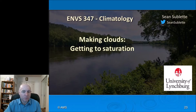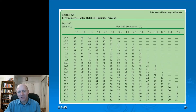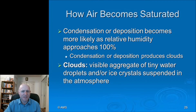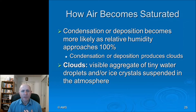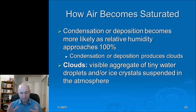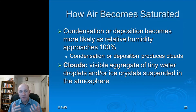Once we reach saturation, clouds form. Condensation — and sometimes deposition — becomes more likely as relative humidity approaches 100%. The definition of a cloud is a visible manifestation of water in the atmosphere: an aggregate of tiny water droplets mixed with or replaced by ice crystals suspended in the atmosphere. Clouds are made of liquid water droplets, ice crystals, or both — water vapor itself is invisible.